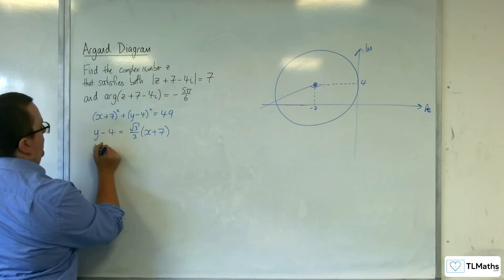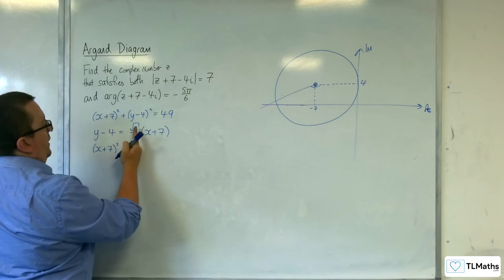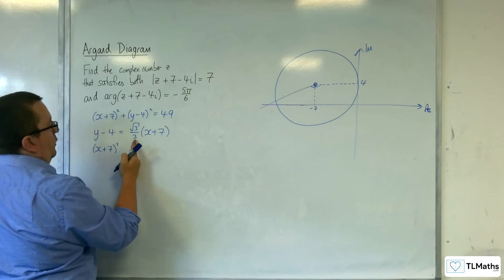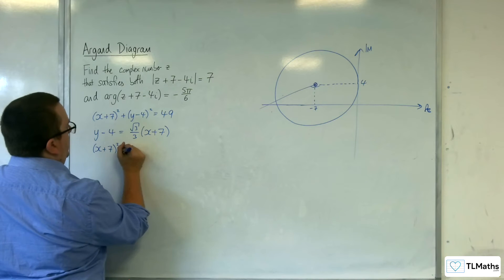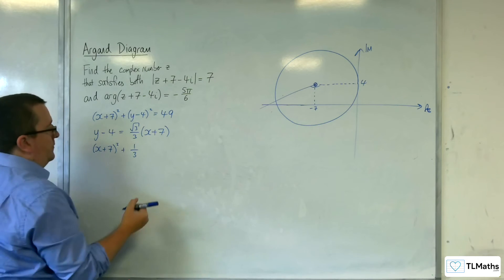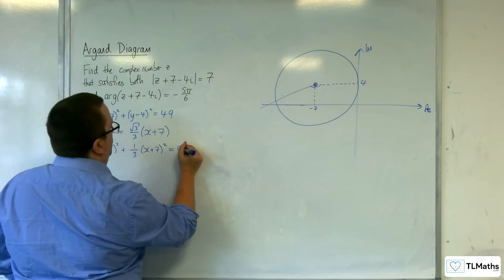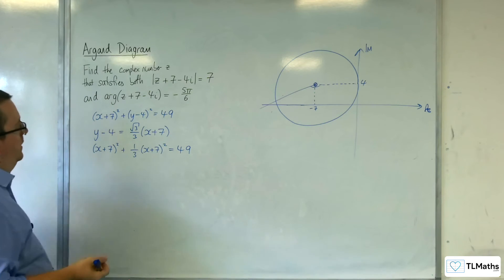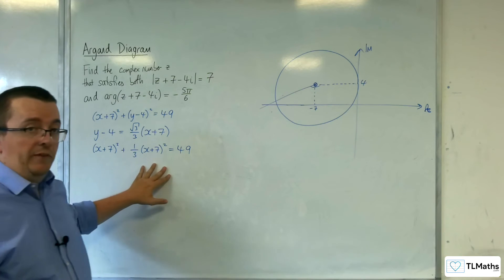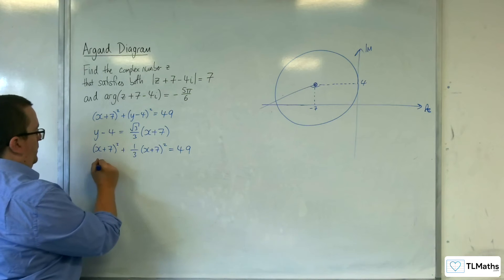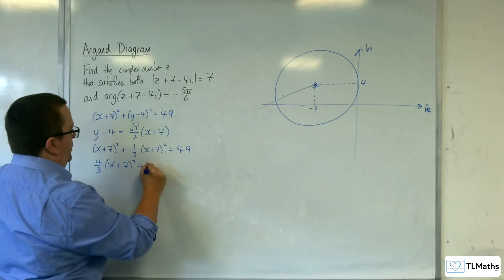Substituting into the circle equation: (x + 7)² plus — squaring (√3/3) gives 3 over 9, which is one third — so plus one third of (x + 7)² equals 49. Then (x + 7)² plus one third (x + 7)² gives four thirds of (x + 7)² equals 49.